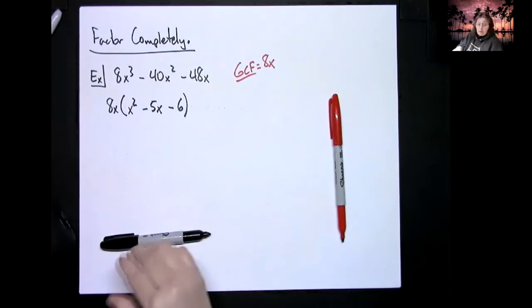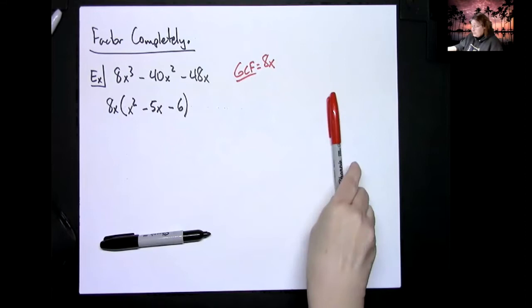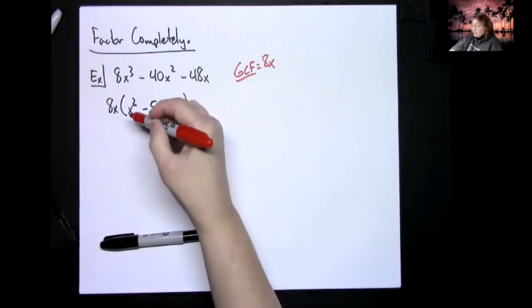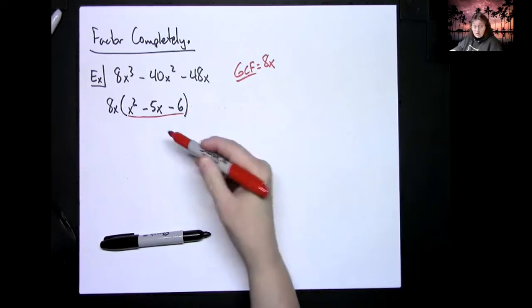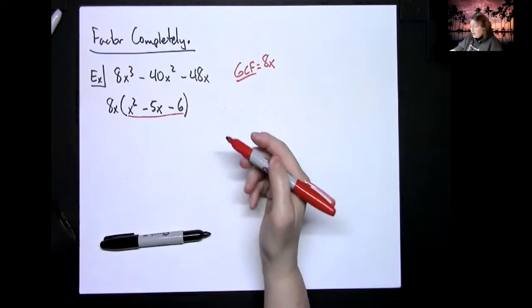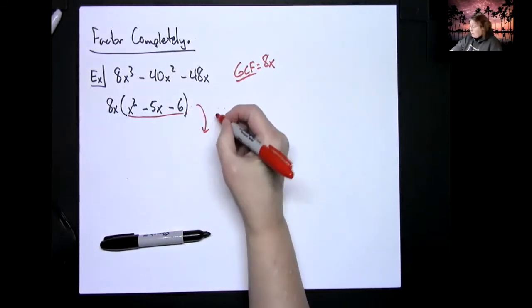Number one mistake is then people just stop right there. Oh I factored out greatest common factor I must be done. But now what you have to do is you've got to keep looking. I'm going to look inside there, that's the trinomials that we factored today, so then my next step is going to be factoring that trinomial.